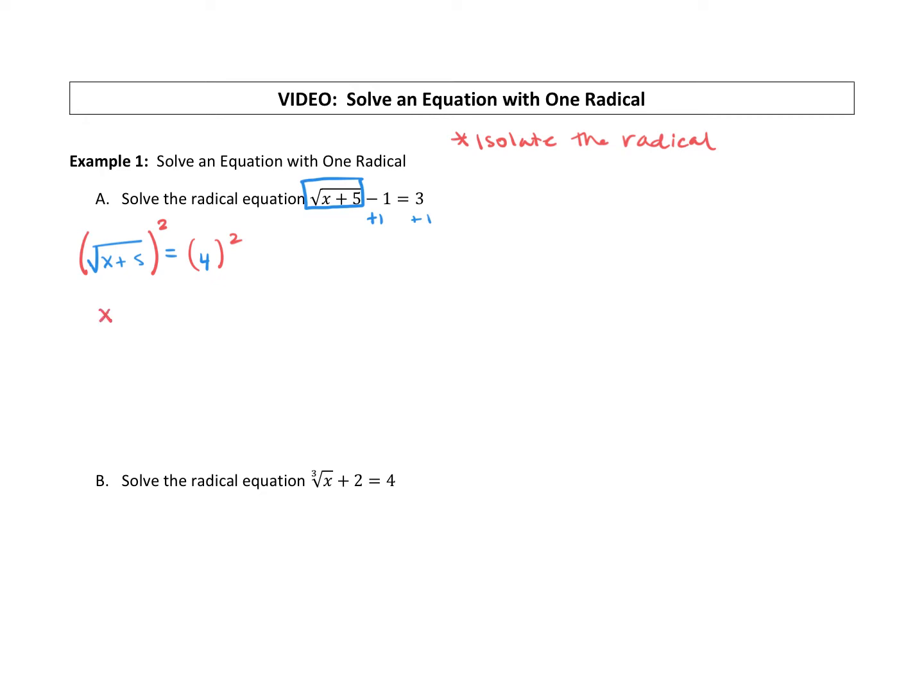So we're going to carry down the x plus five is equal to, we had to square the other side of the equation as well. Four squared is 16 and then we solve. So now we can actually get x alone and x equals 11.